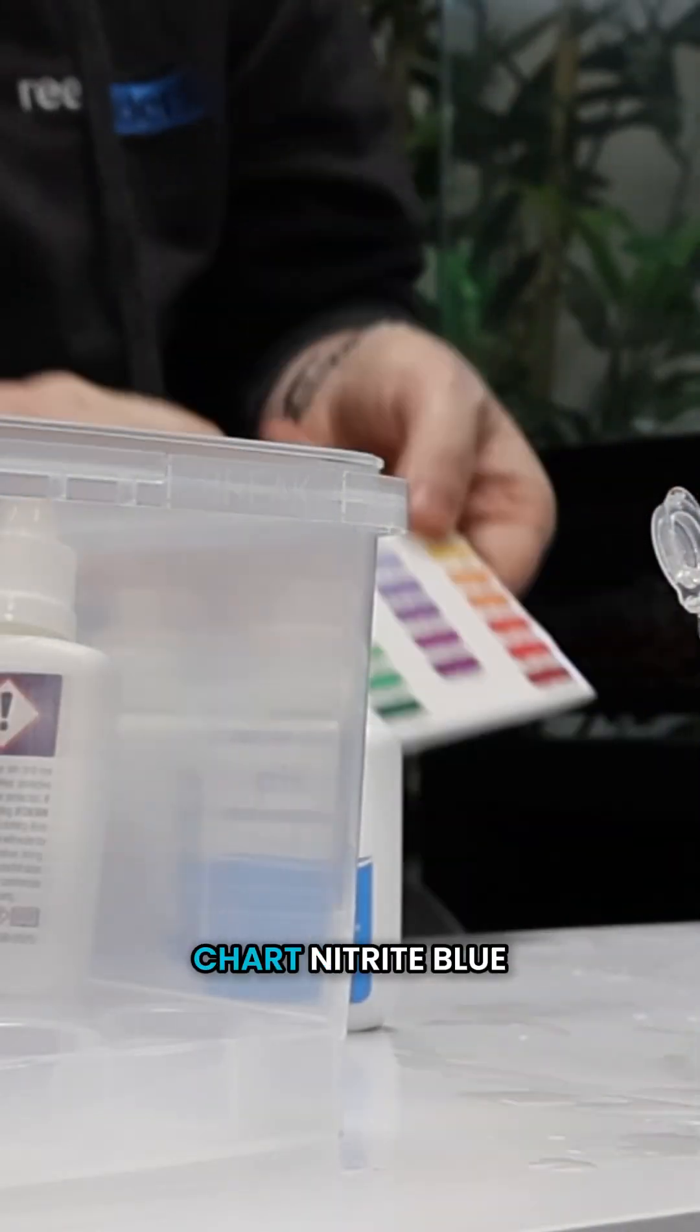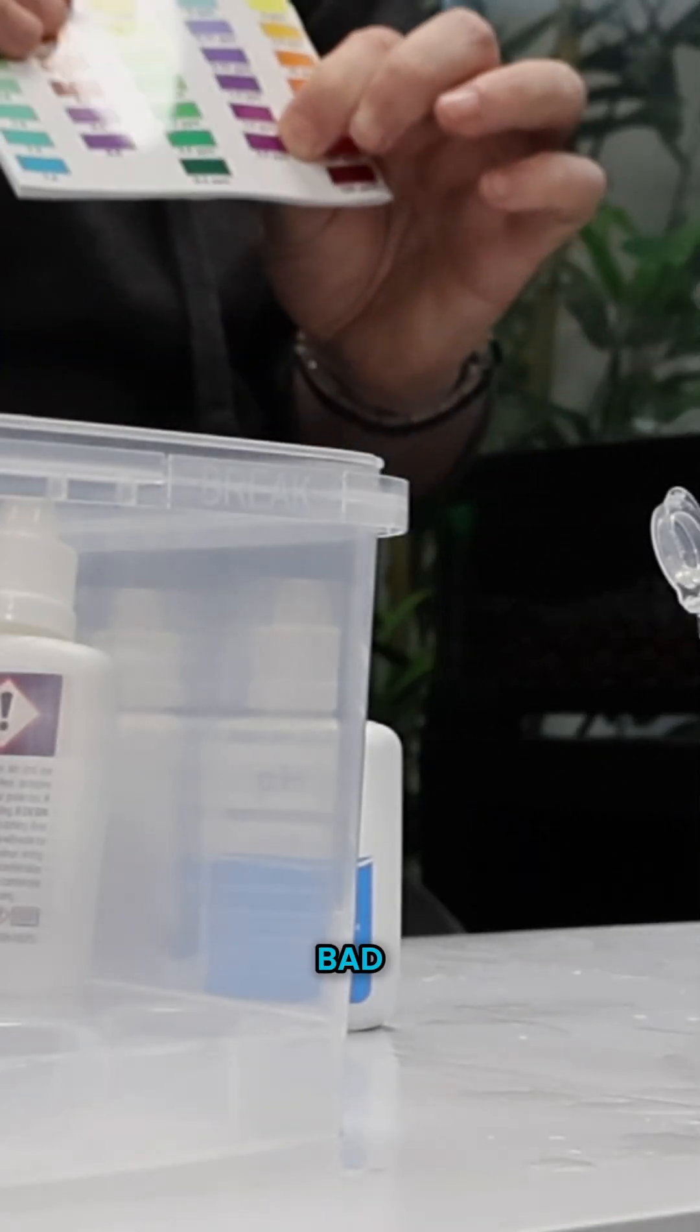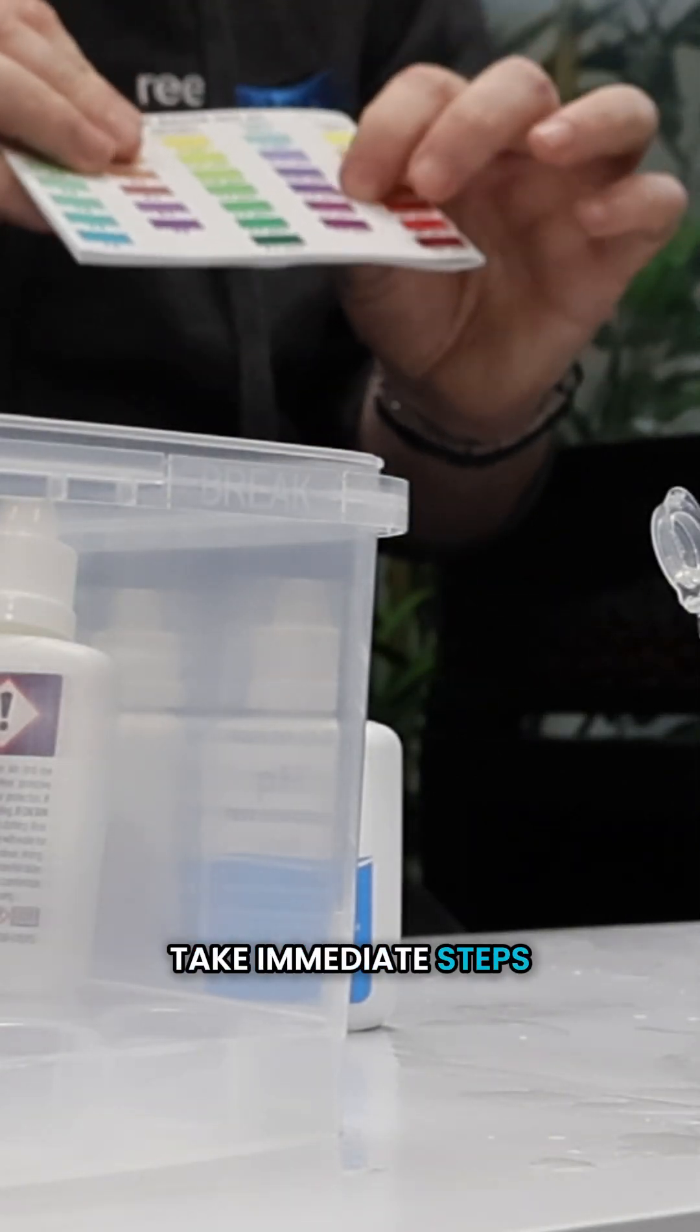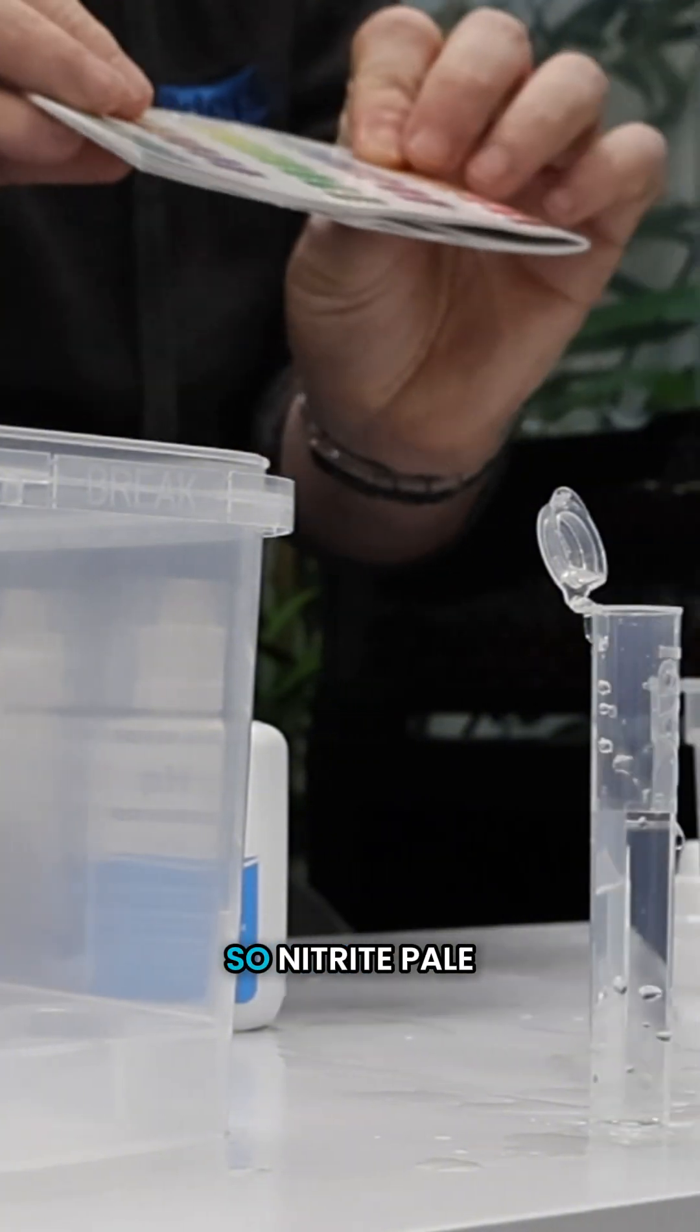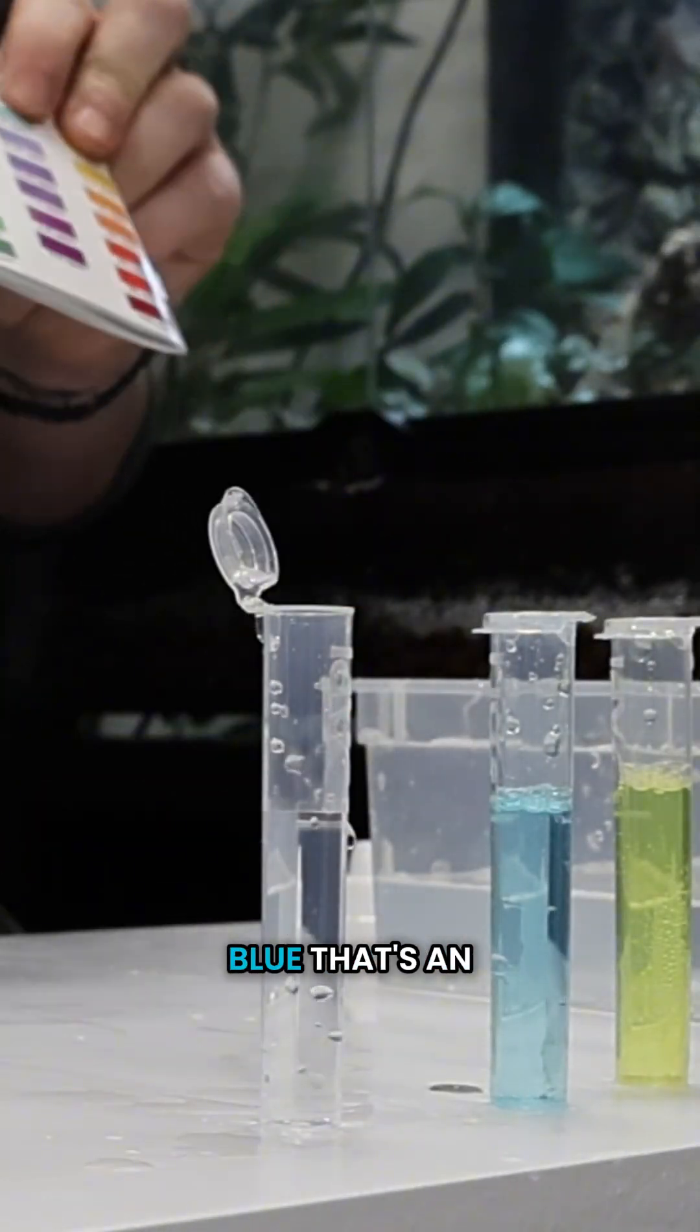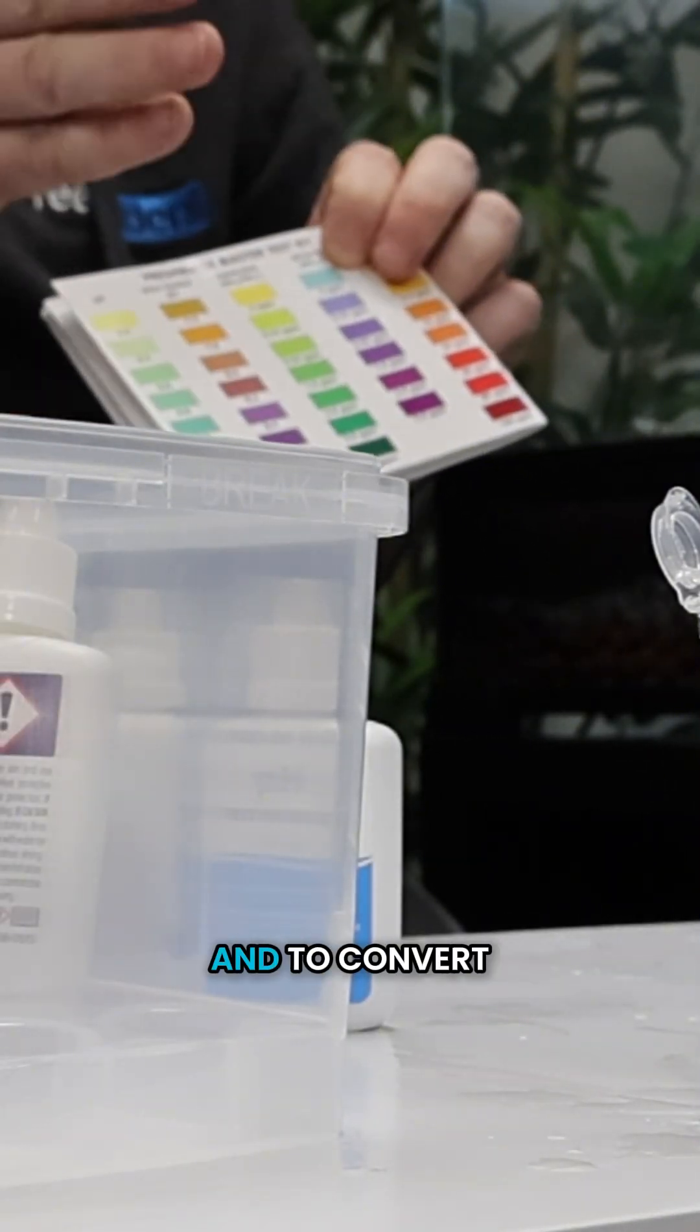Looking at our chart, nitrite blue is good, zero ppm. Purple or magenta is bad. Again, if we had high nitrite, we'd have to take immediate steps to resolve that so our fish don't get poisoned and die. So nitrite, pale blue - that's an excellent result. It means there's sufficient strains of bacteria to convert ammonia and to convert nitrite, and they're the two most important parameters.